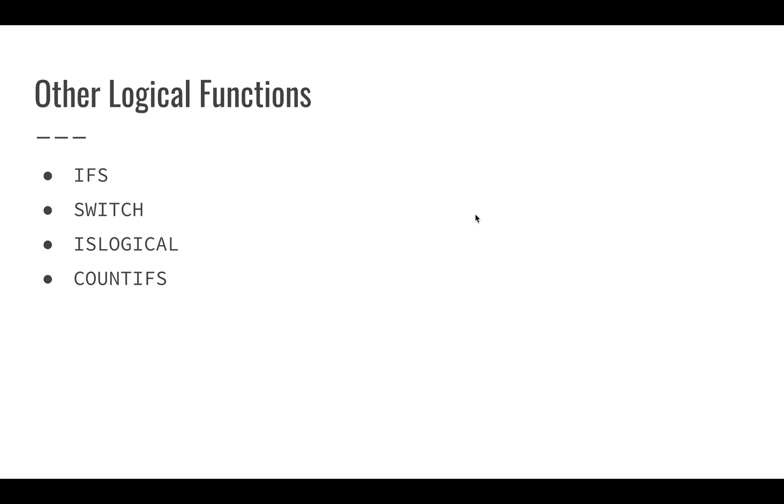The SWITCH allows you to take one value and choose multiple paths. We'll take a look at demonstrating that in a straightforward video. And then ISLOGICAL will give you a true value or a false value if the parameters are logical. And we also have this interesting COUNTIFS, which will allow you to evaluate multiple ranges for multiple criteria. But we'll take a look at all of these in our videos coming up.